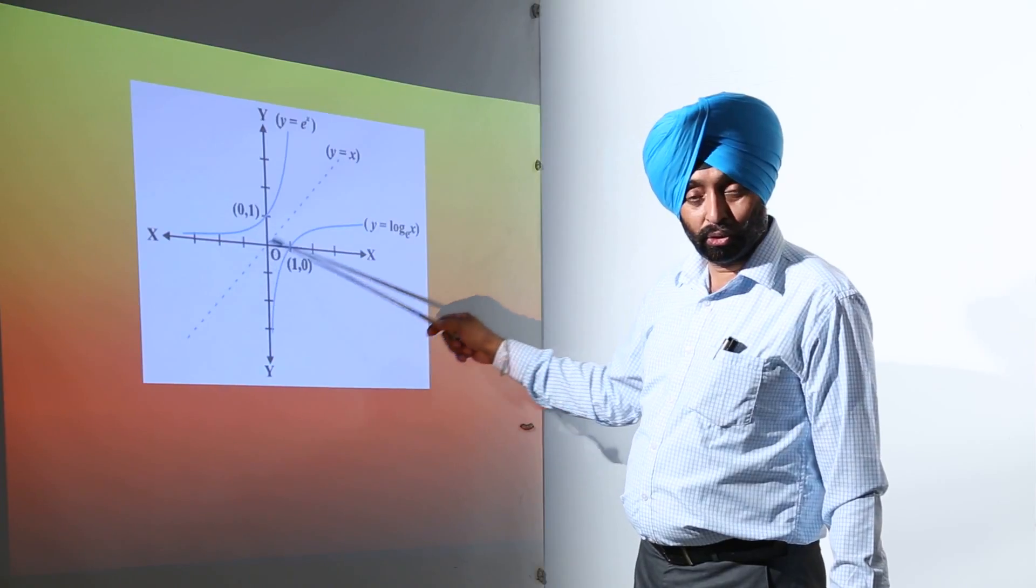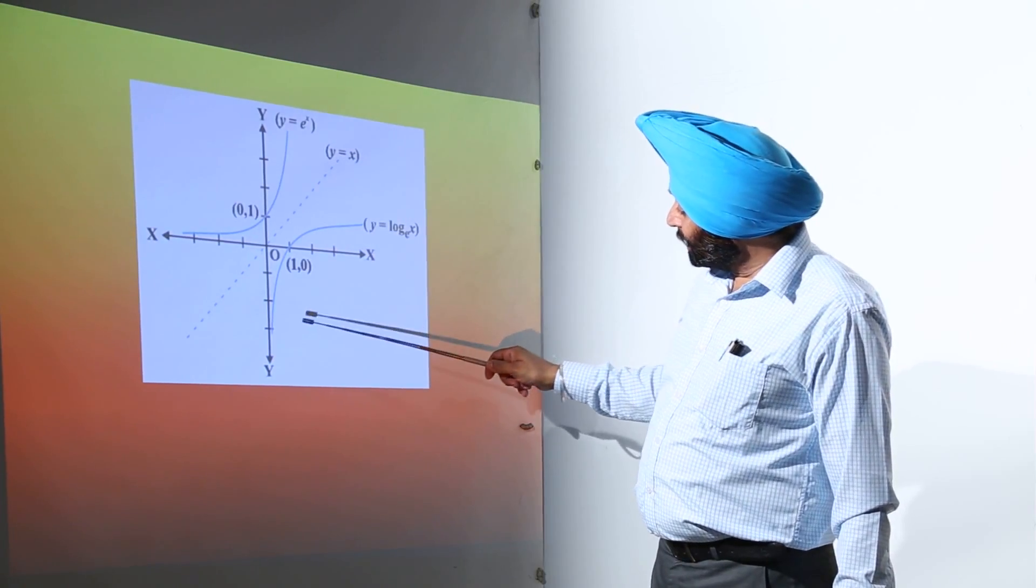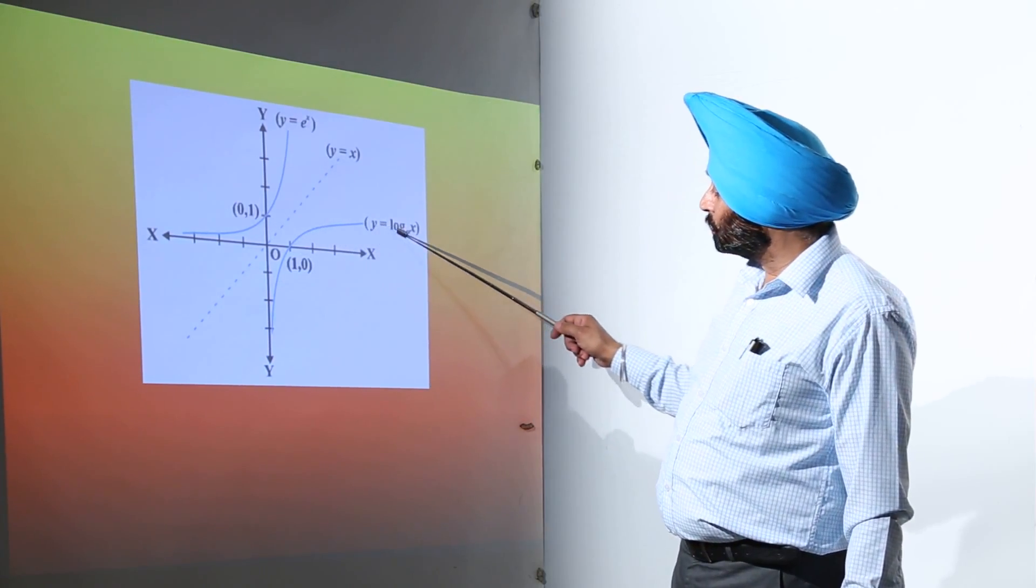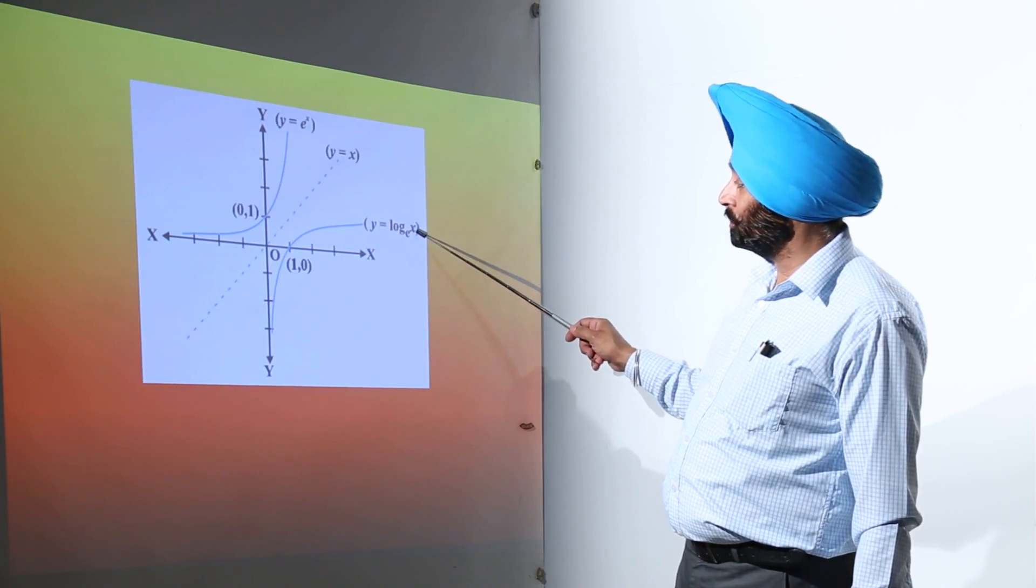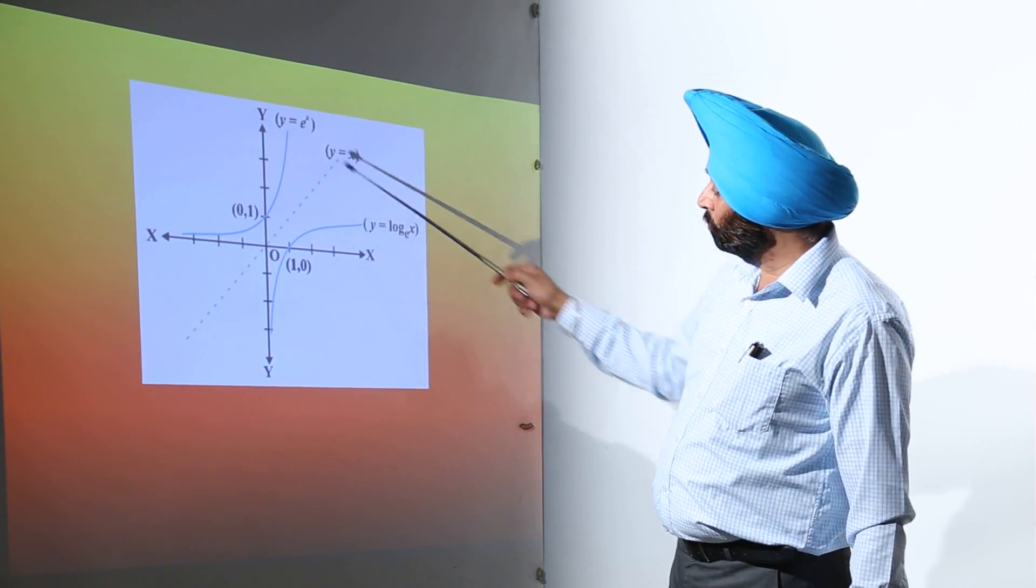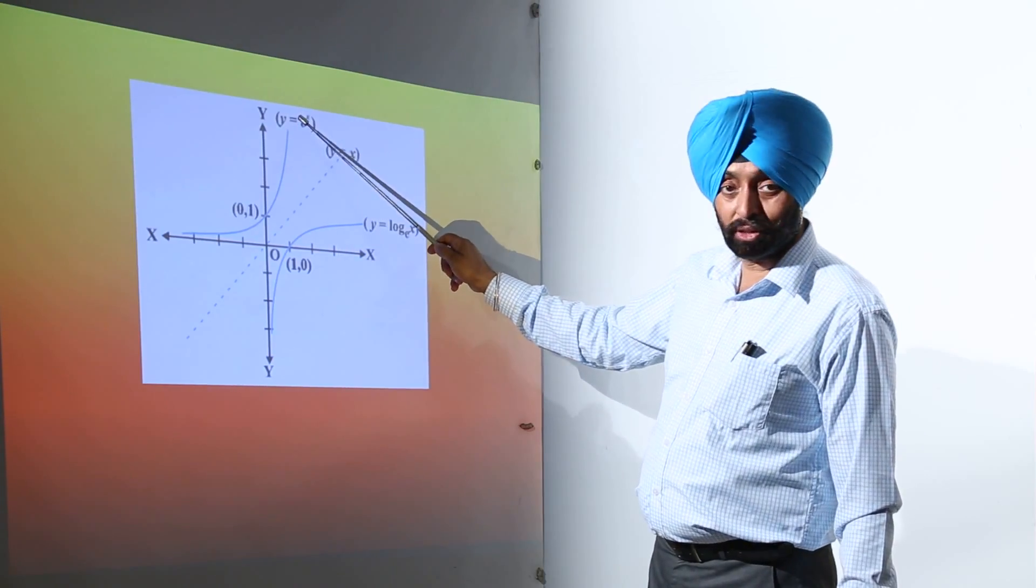This line is for y equals x, a straight line. And this graph is for y equals log base e of x. Exponential form, logarithm form.